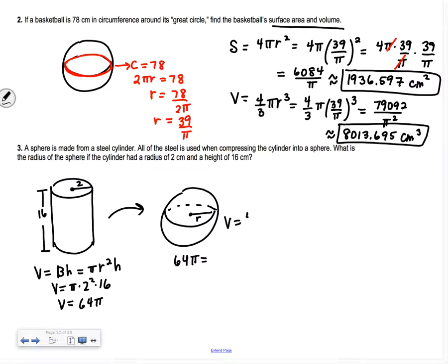We want that same 64π as our volume of the sphere. Volume of the sphere is 4/3 πr³. So 4/3 πr³ = 64π. When we divide by π, these two π's cancel out. We have 64 = 4/3 r³.